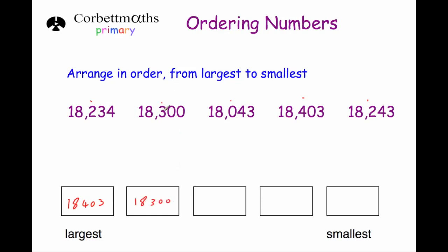We have two numbers with 2s in the hundreds column: 18234 and 18243. Moving to the tens column, 18234 has a three and 18243 has a four, so 18243 is bigger. Then comes 18234. The smallest value is 18043 because it has a zero in the hundreds column.